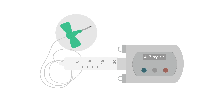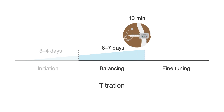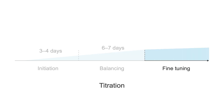Most patients have an average infusion dose of four to seven mg per hour during the day, with lower doses needed overnight. At the end of the balance period, patients should feel their medications start working within 10 minutes of hooking up the pump. They may continue to notice mild fluctuations during the day depending upon oral medication doses, nutrition, and activities. These symptoms are minimized during the third and final titration phase, fine-tuning, which typically occurs over the subsequent three months.